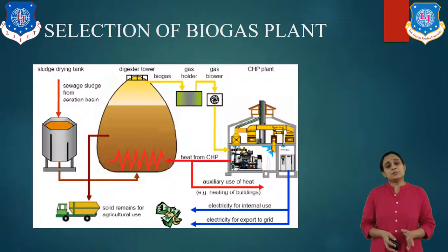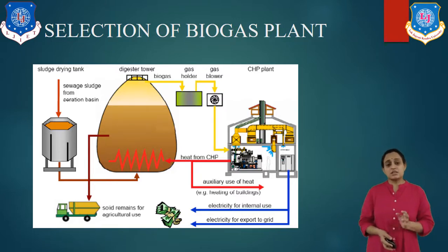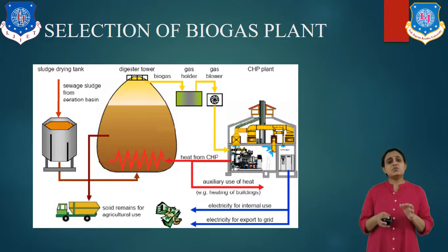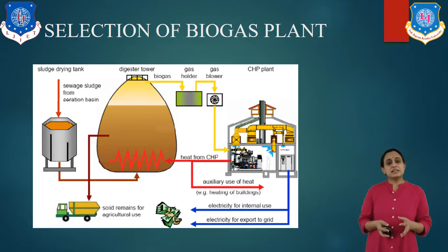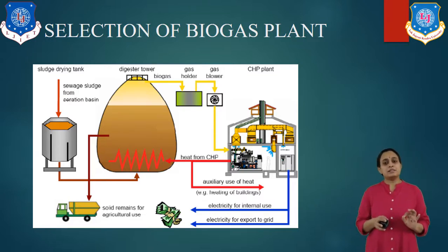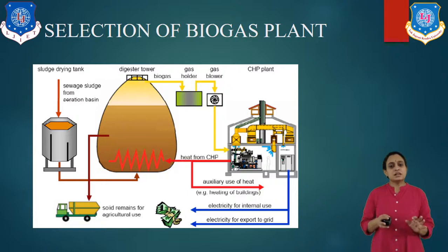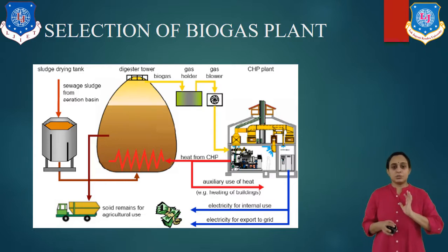How do we select the biogas plant? The selection of a biogas plant completely depends upon many factors. As we have seen, there are many models, many designs, and many sizes of biogas plants. The most appropriate type of model and capacity should be selected so that it gives satisfactory performance, considering local environment, availability of feed stocks, operating skill, and economy.